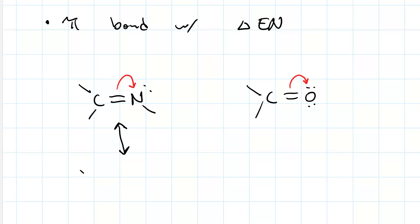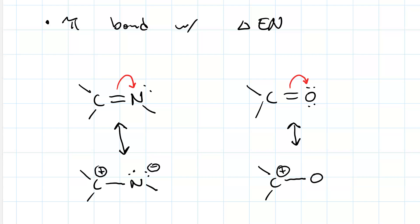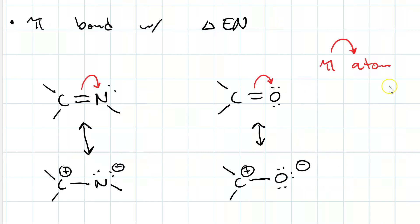The resulting resonance structure for the compound with nitrogen would give a plus-one formal charge on the carbon and a minus-one formal charge on the nitrogen. For the carbonyl, we'd end up with a plus-one formal charge on the carbon and a minus-one formal charge on the oxygen. In each case, the tail of the curved arrow begins on a pi bond and ends on the atom, creating a lone pair. You only need one curved arrow for this resonance pattern — I've just shown two different examples.